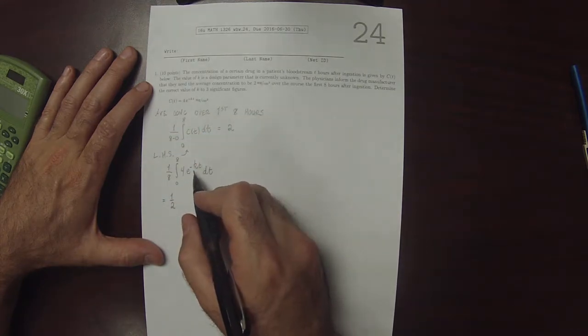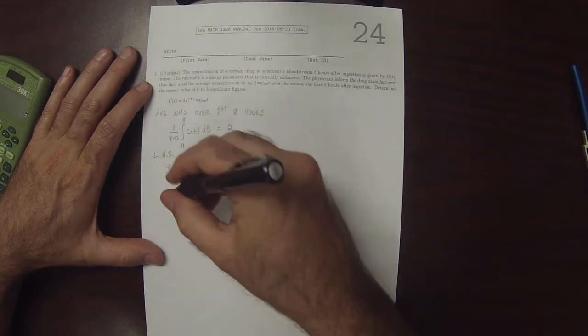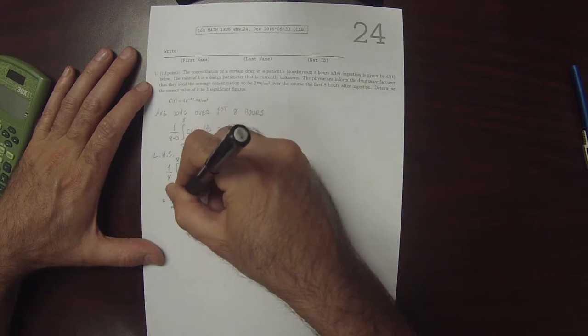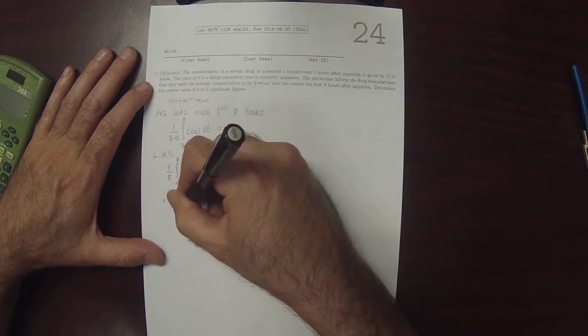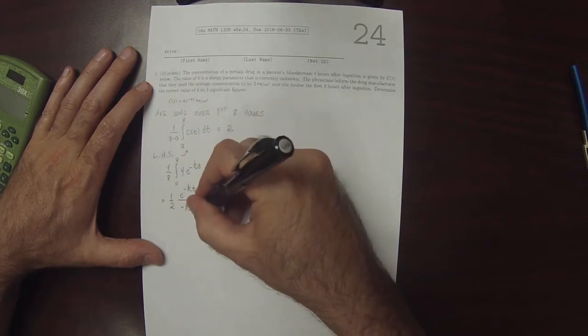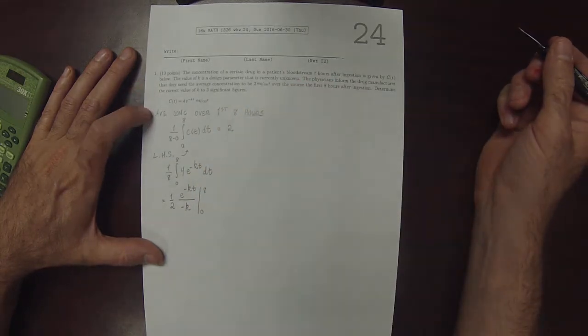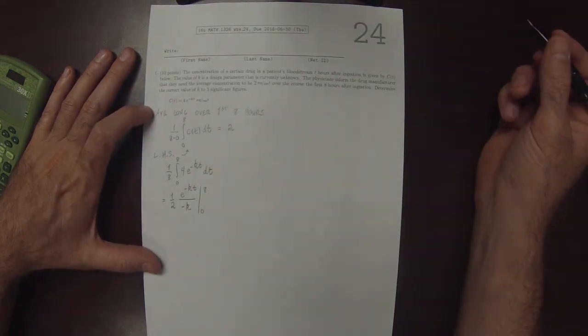And then, using the fundamental theorem, we know the antiderivative of e to negative Kt is e to negative Kt divided by negative K. And then we'll evaluate this from 0 to 8.